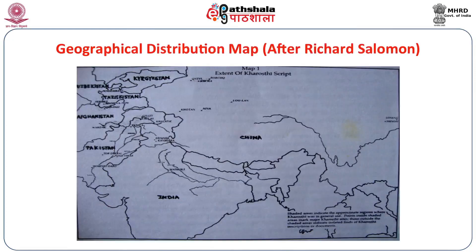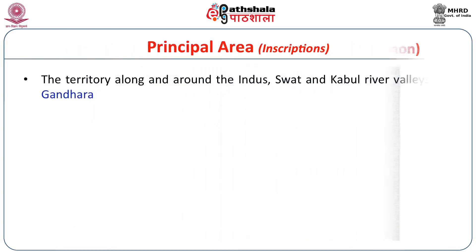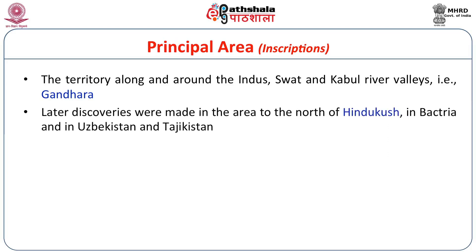The geographical distribution of Kharosthi begins with the northwestern part of India, the kingdom known as Gandhara. The language for which the Kharosthi script was used was called Gandhari Prakrit, also known as Northwestern Prakrit. Gandhara — including Pakistan and northern Afghanistan — is the core territory for Kharosthi. Further north, the script is also found in the Swat valley, the Kabul river valleys, and in Kyrgyzstan.